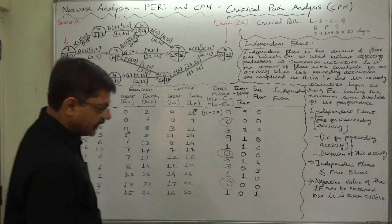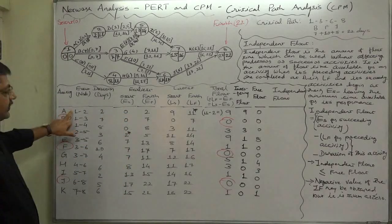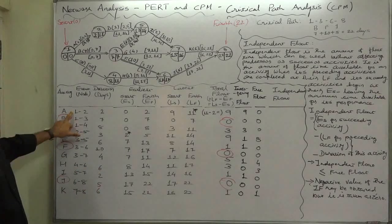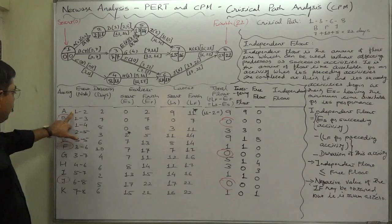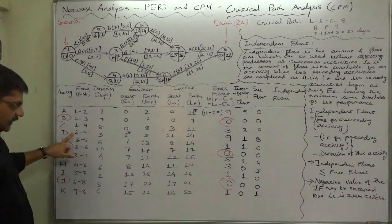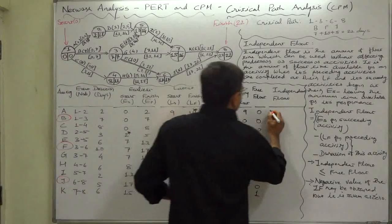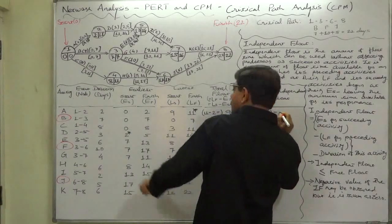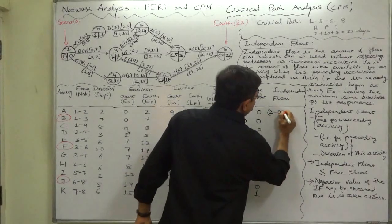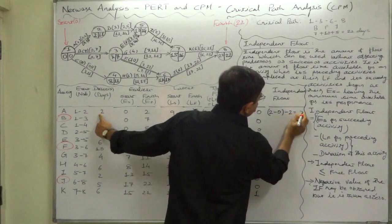Let's learn from our case. For activity A, there is no preceding activity, so the latest finish time for the preceding activity is taken as 0. It has a succeeding activity D, whose earliest start time is 2. So: 2 minus 0 minus duration of A (2) equals 0. Independent float of A is 0.